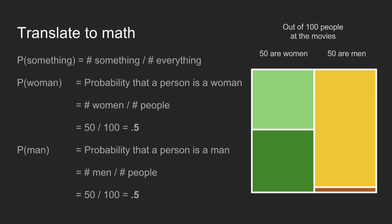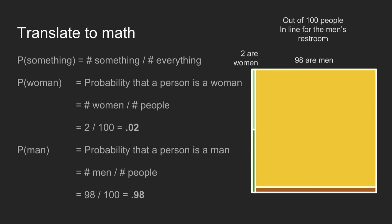To translate this to math: the probability that a person is a woman is the total number of women divided by the total number of people — 50%. Similarly for men. Moving to the men's restroom line, the probability that someone is a woman is 2%, and 98% for men.